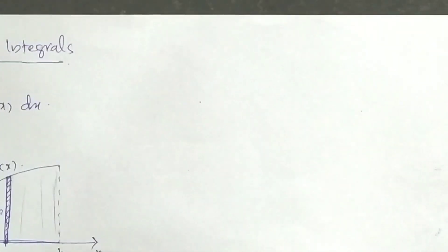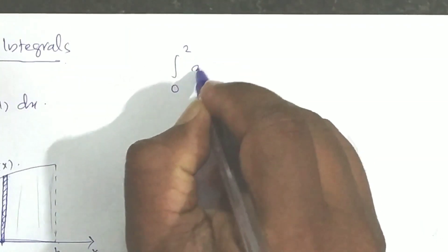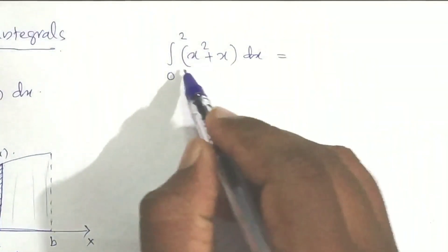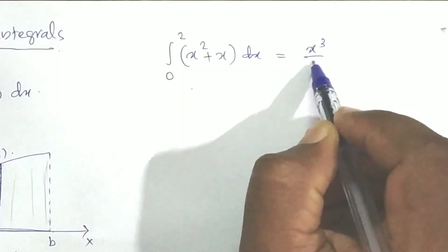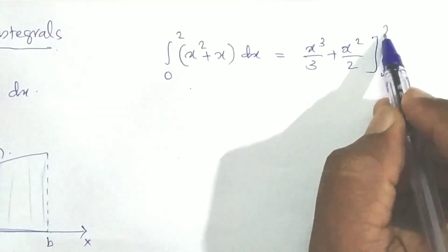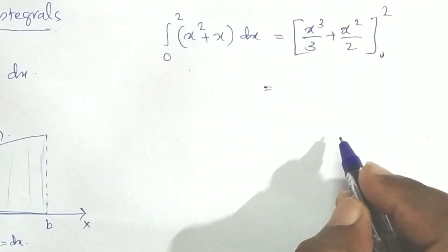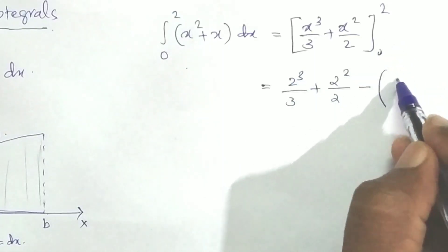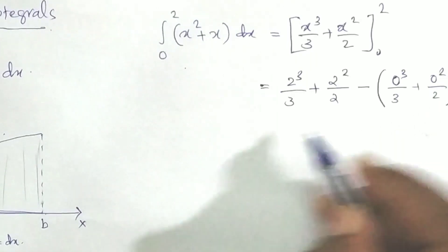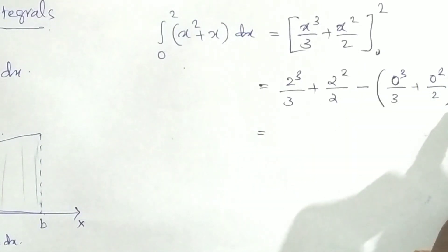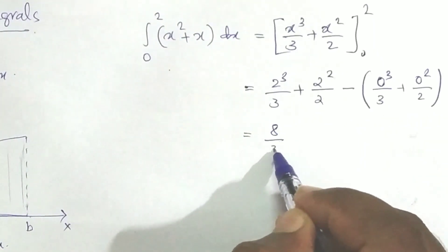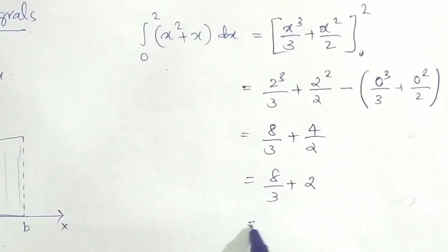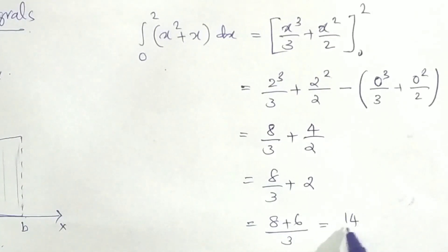We will calculate the integral from 0 to 2 of (x² + x) dx. Integrating gives [x³/3 + x²/2] from 0 to 2. Substituting the upper limit: 8/3 + 4/2 = 8/3 + 2. Substituting the lower limit gives 0. Therefore the answer is 8/3 + 2 = 14/3.